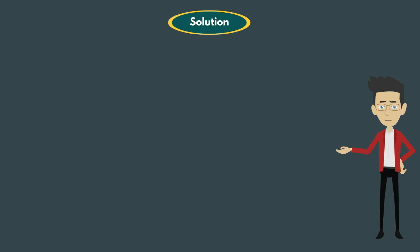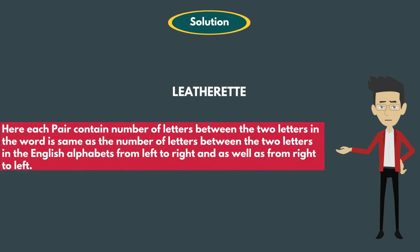Let's see the solution. The given word is LEATHERETTE. They are asking how many such pairs of letters, forward and reverse, are there in the word LEATHERETTE, where each pair contains the same number of letters between the two letters in the word as in the English alphabets, from left to right as well as from right to left.